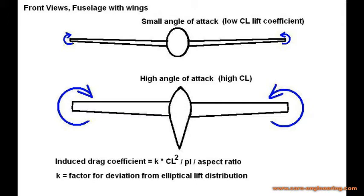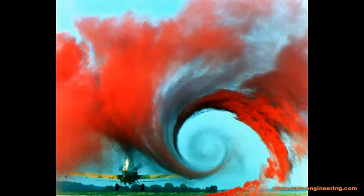The difference in pressure has to equalize at the ends, and it does so in the form of vortices. Vortices consume a lot of energy, so the higher the angle of attack is and the larger the pressure difference is, the larger are the vortices and the higher is the induced drag. All lifting surfaces produce induced drag, and this can be seen when there is smoke or other particles in the air.